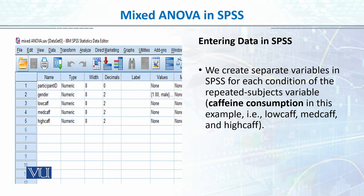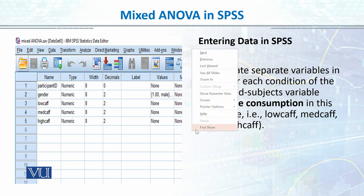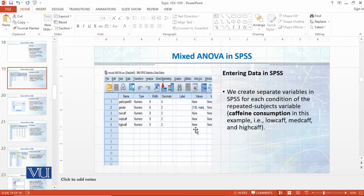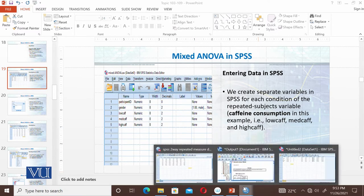In SPSS, the data is arranged in rows and columns — variables in columns, participants in rows. One variable equals one row in the variable view. Now let's go to SPSS and enter data for the same example we have discussed.